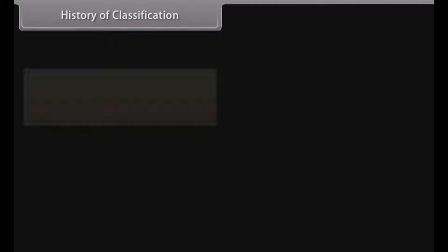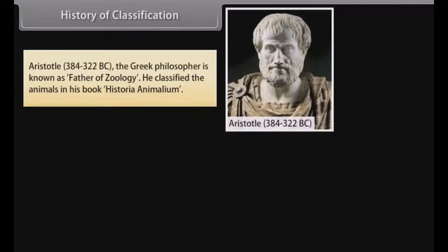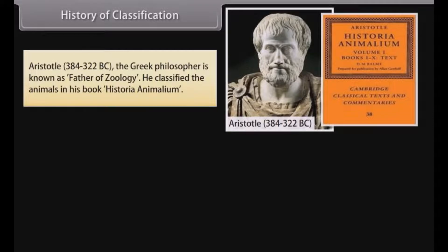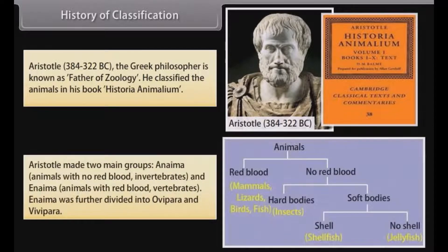Aristotle (384–322 B.C.), the Greek philosopher known as the father of zoology, classified animals in his book Historia Animalium. He made two main groups: Anaima — animals with no red blood (invertebrates) — and Enaima — animals with red blood (vertebrates). Enaima was further divided into ovipara and vivipara.